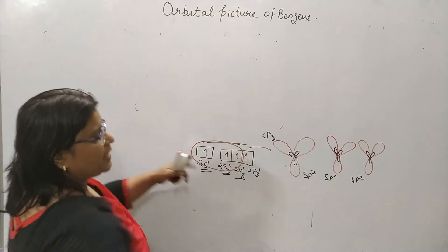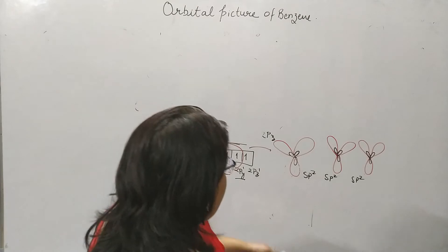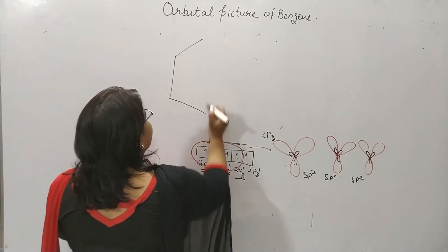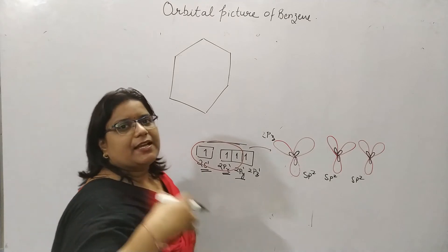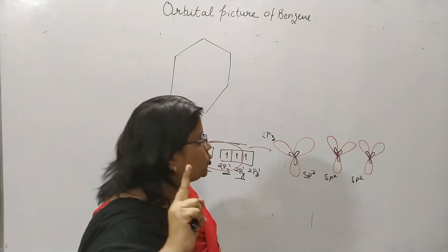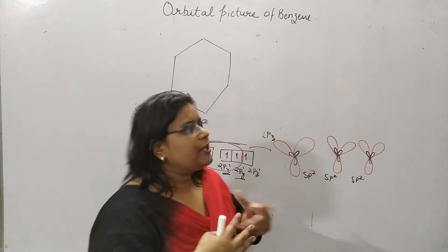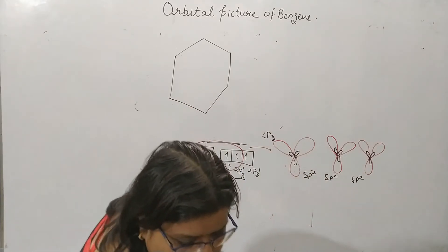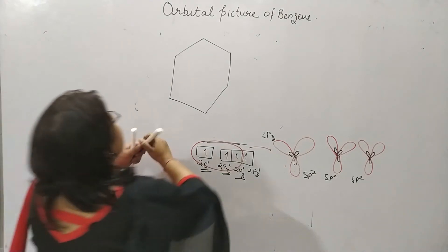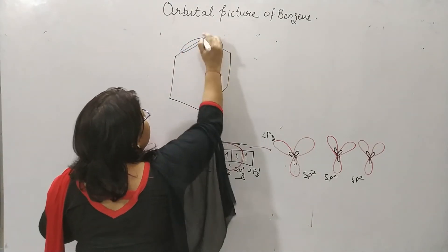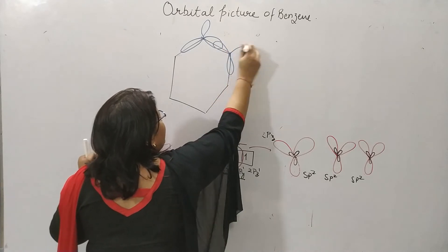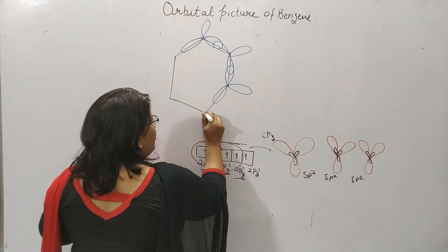As we have discussed, carbon has 3 sp2 hybridized orbitals in its excited state. One sp2 hybridized orbital co-axially overlaps with the 1s of the hydrogen, and the remaining 2 sp2 hybridized orbitals co-axially overlap with neighboring carbons. For each carbon, we draw 3 sp2 hybridized orbitals.